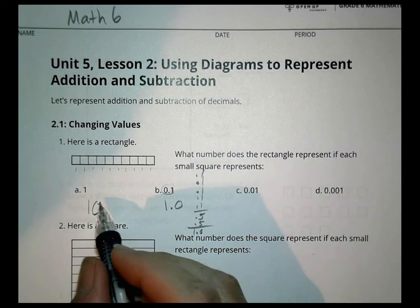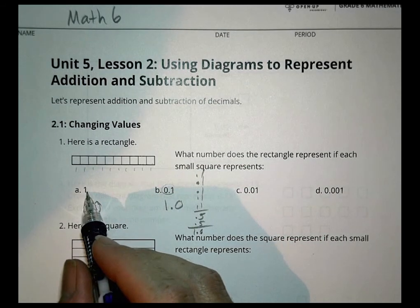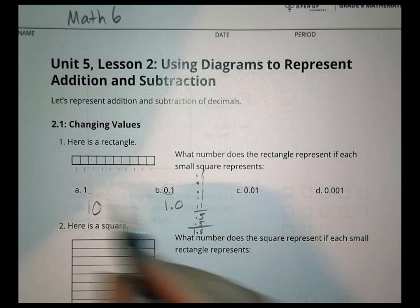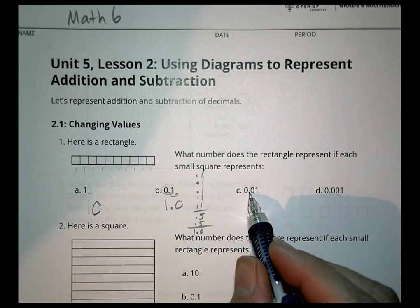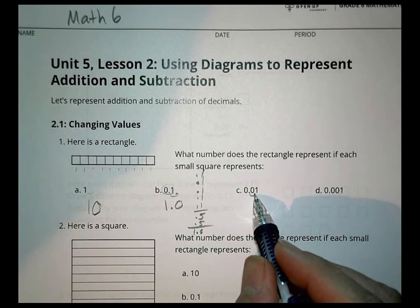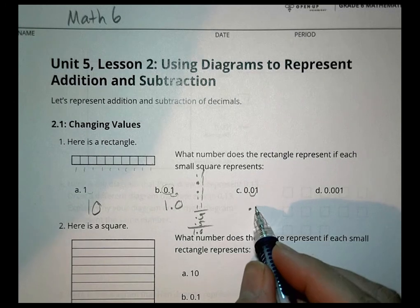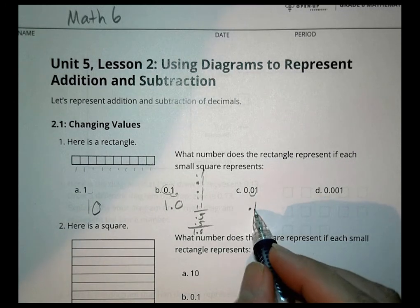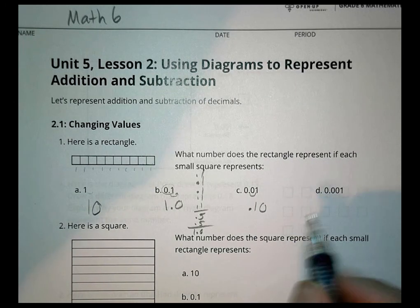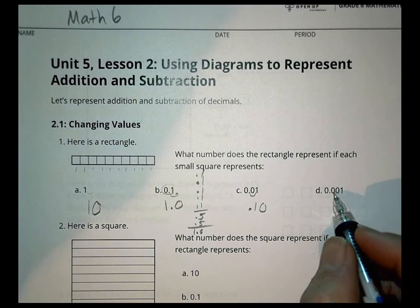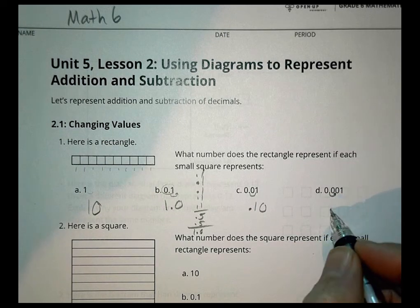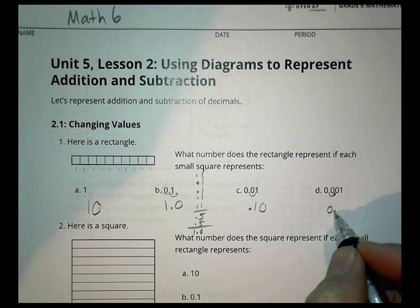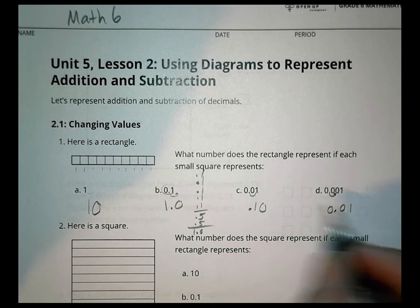Knowing that, we've moved the decimal here — in this case, we moved it over one way to get tenths, and over the other way to get hundredths. If we move it over one more space that way, we end up with 0.10, and then 0.01.